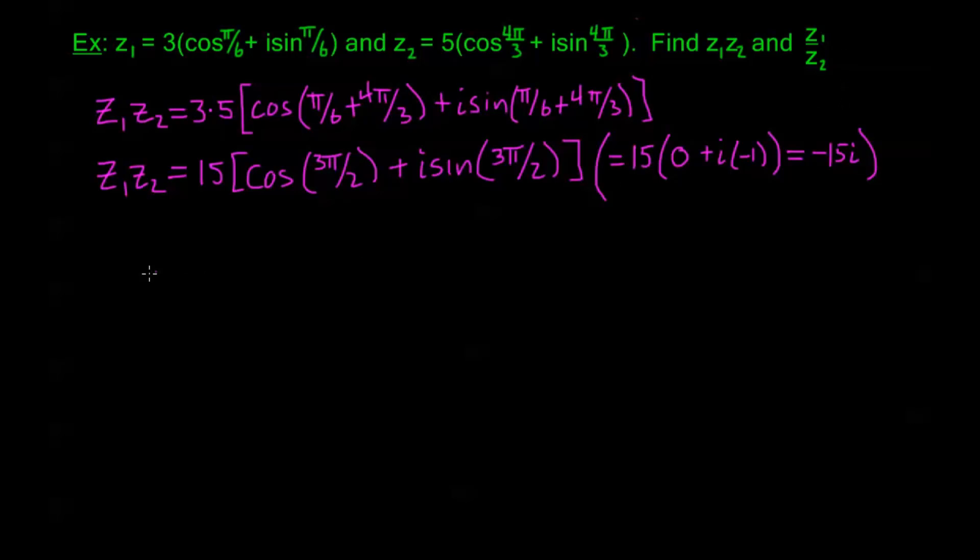Now let's take a look at division. Z₁ over Z₂. We know we're going to have the ratio of my moduli, so I have the modulus of Z₁ on top divided by the modulus of Z₂, so I have 3/5. I'm going to have cosine.